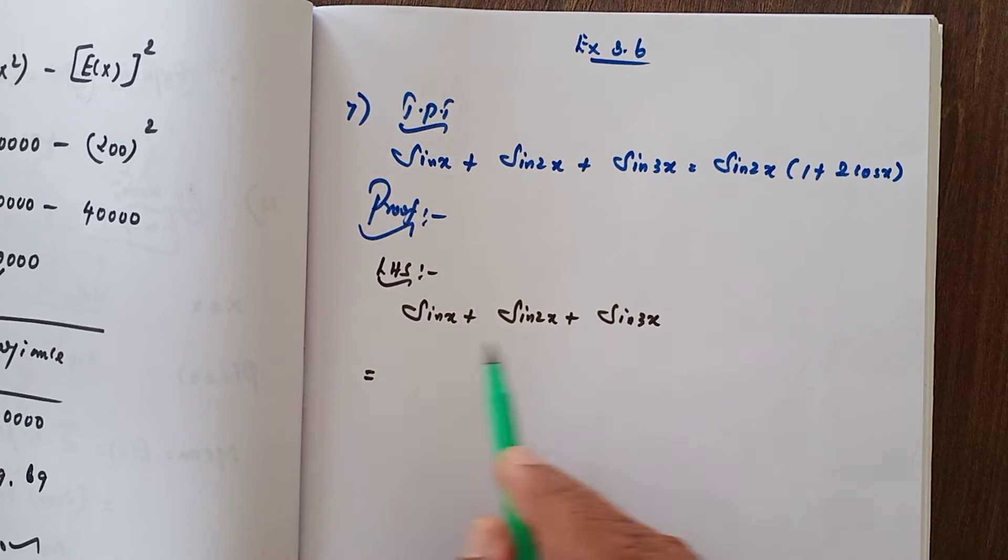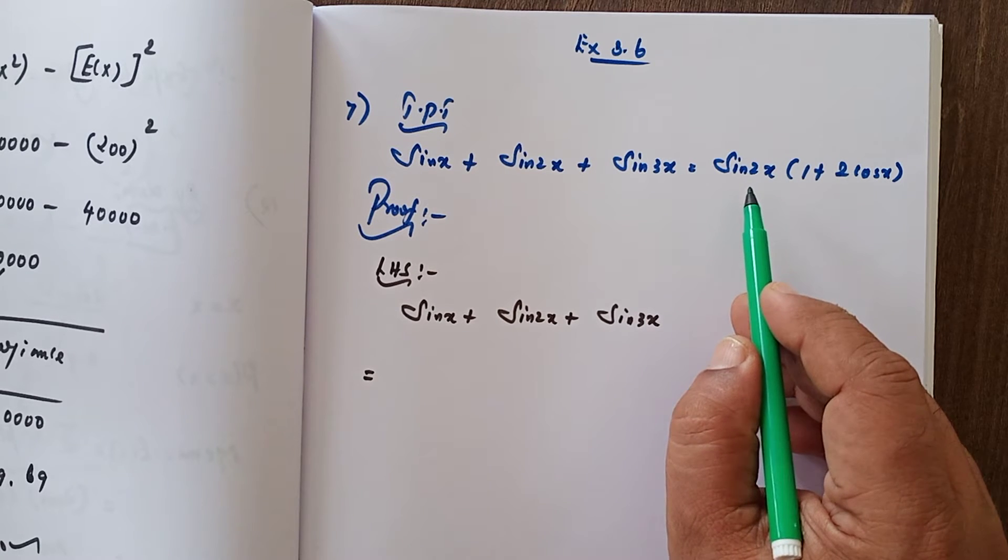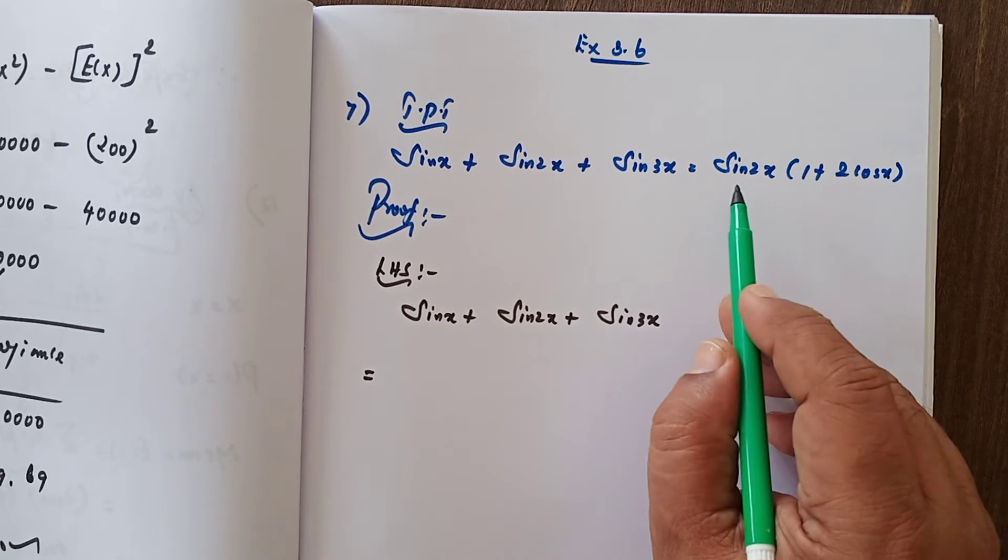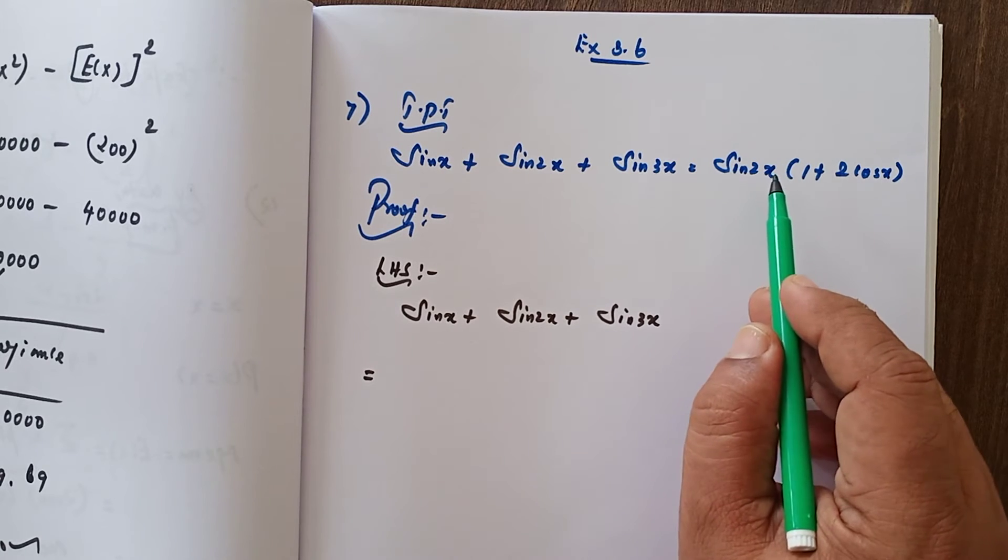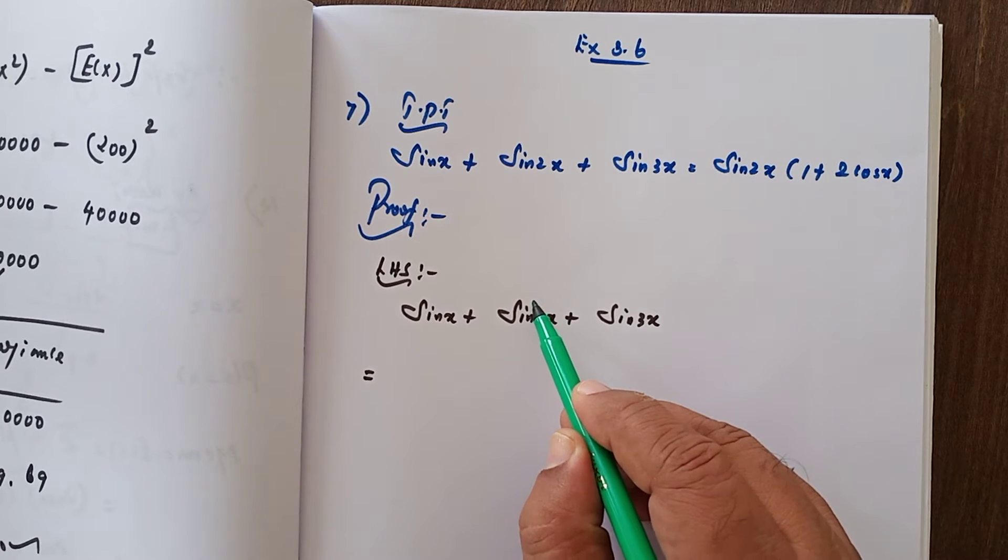Here I have taken the LHS: sin x plus sin 2x plus sin 3x. Look at the LHS; we have sin 2x into 1 plus 2 cos x. Since sin 2x is in the right-hand side, I retain sin 2x.